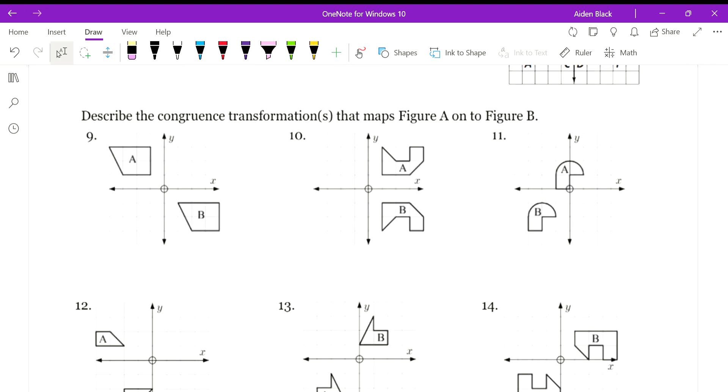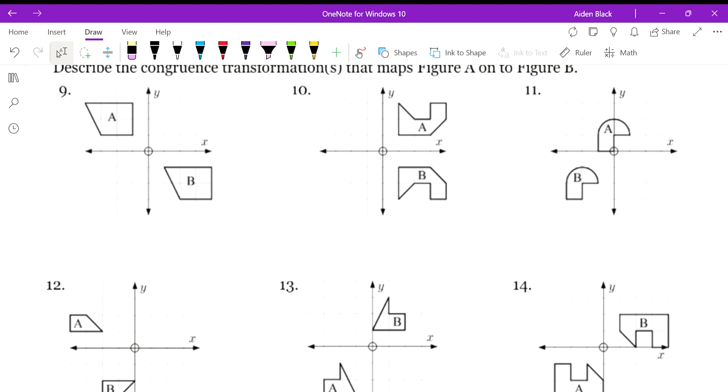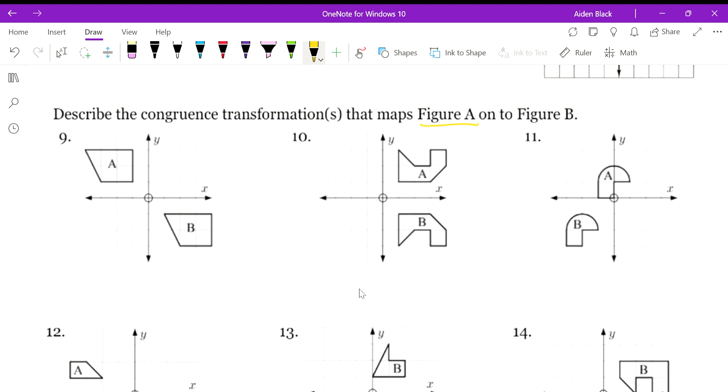Okay, cool. Let's check out these problems. It says, describe the congruence transformation that maps figure A onto figure B. So we're going from A to B. This order is very important, okay? Because if you're translating down and to the right from figure A to B, if you wanted to know from figure B to A, it would be up and to the left. It would be backwards.